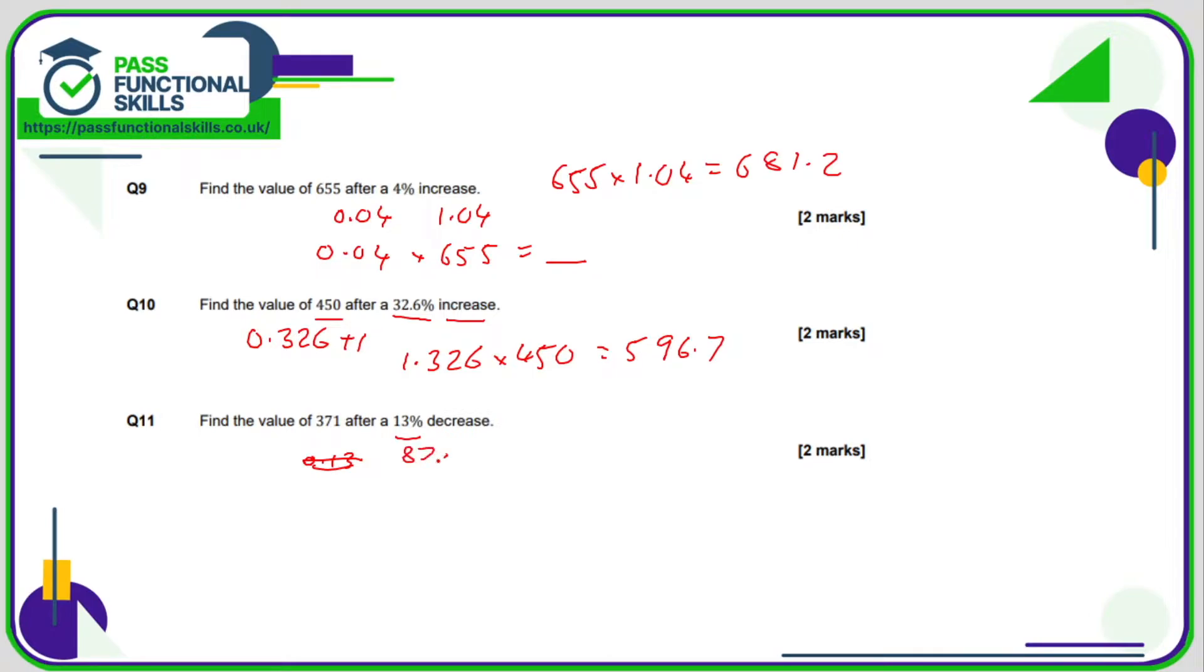So if we're talking about 87%, then our multiplier is 0.87 multiplied by 371, and that comes to a total of 322.77. Alternatively, work out 13% of this amount, and then subtract that amount from 371. So for all of these percentage increase and decrease questions, there are several ways you can get to the final answer.